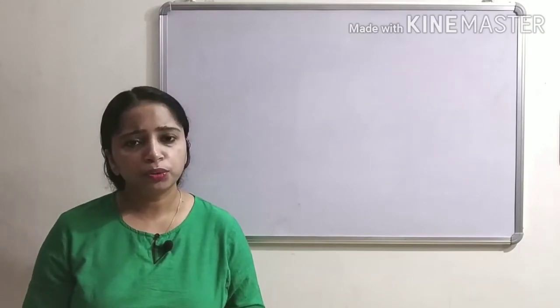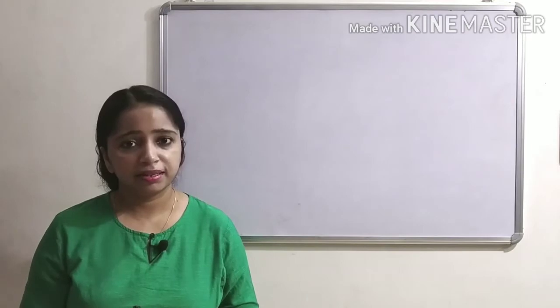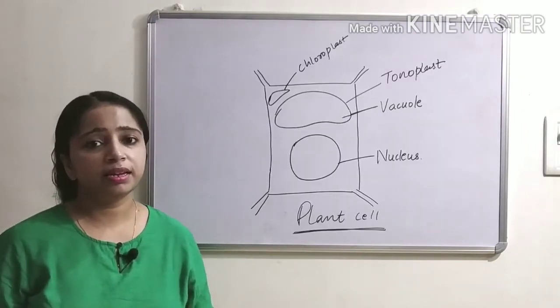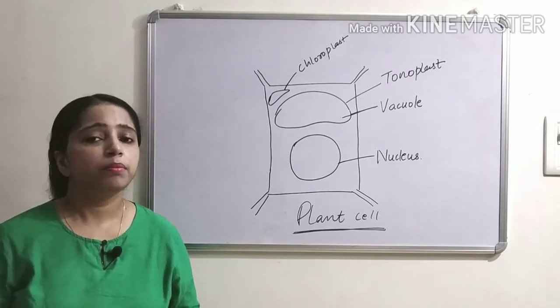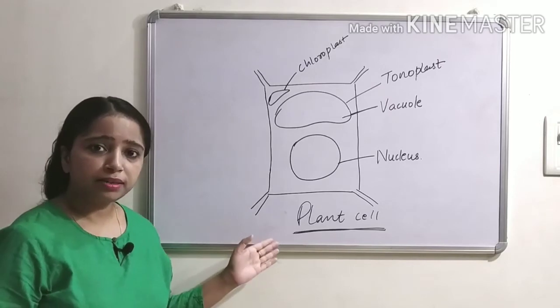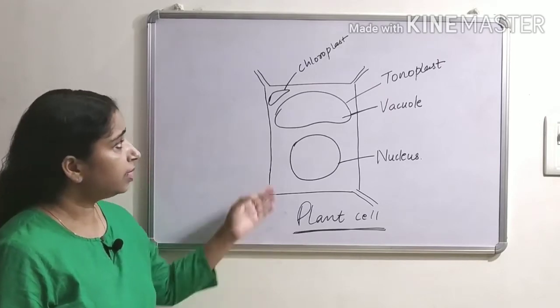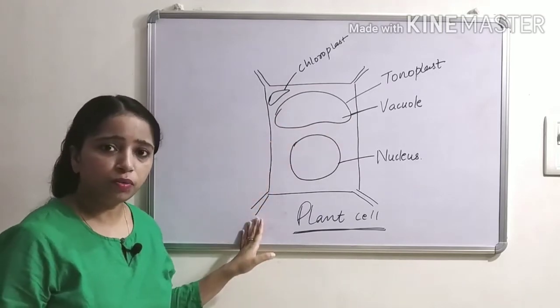First let me show you how a vacuole looks like in a plant cell. Guys, vacuoles are usually large in size. They can occupy a major portion of the plant cell volume. This is the rough diagram of a plant cell. Here you can see that the vacuole is occupying a major portion of the plant cell volume.